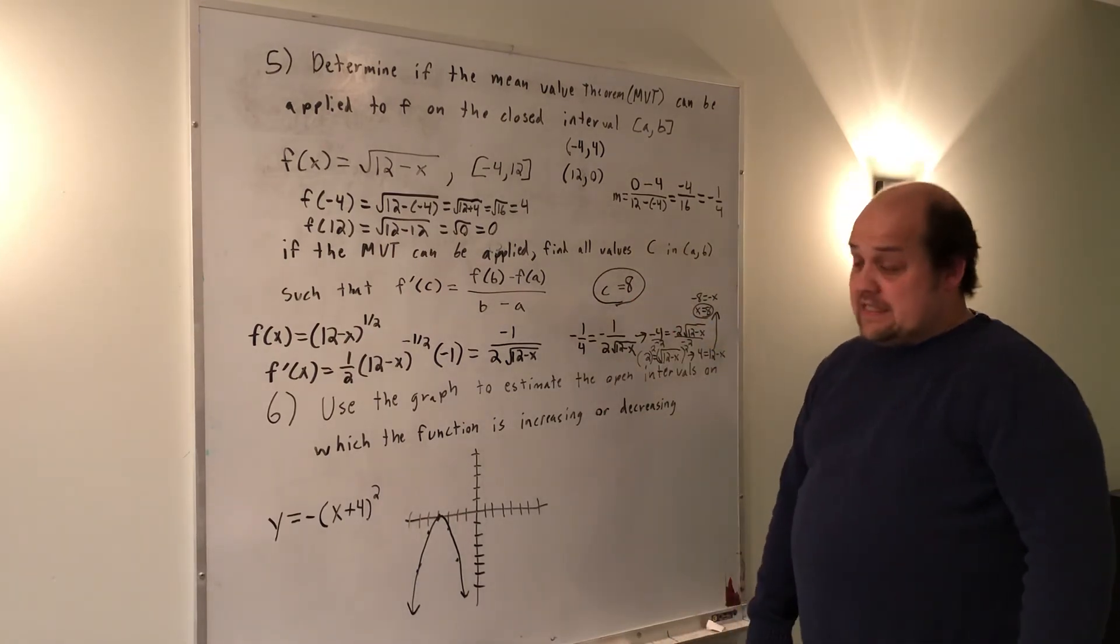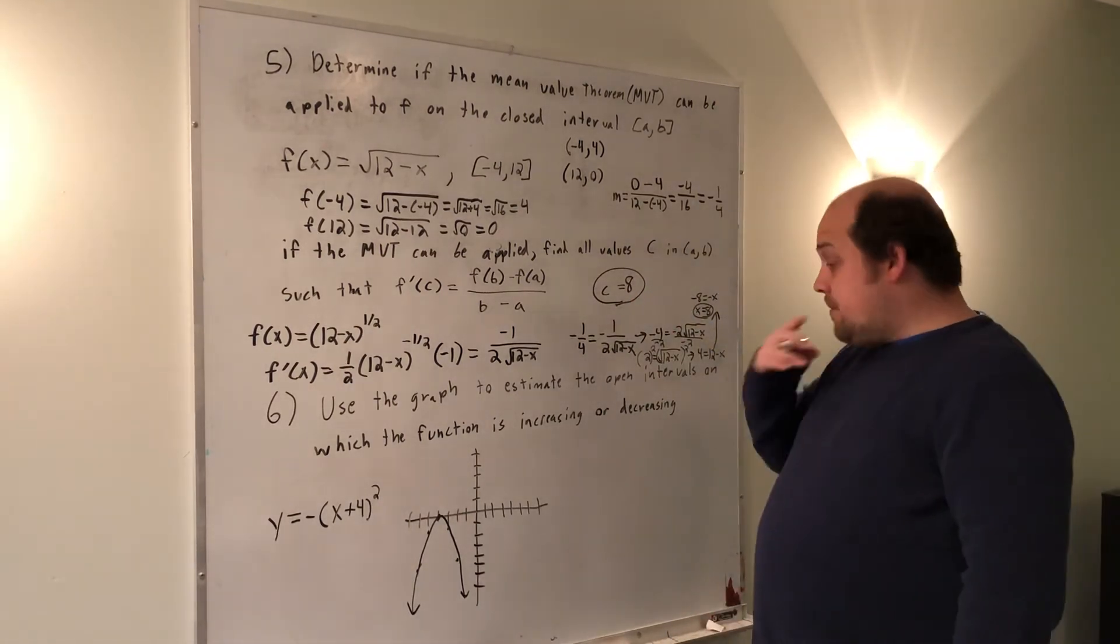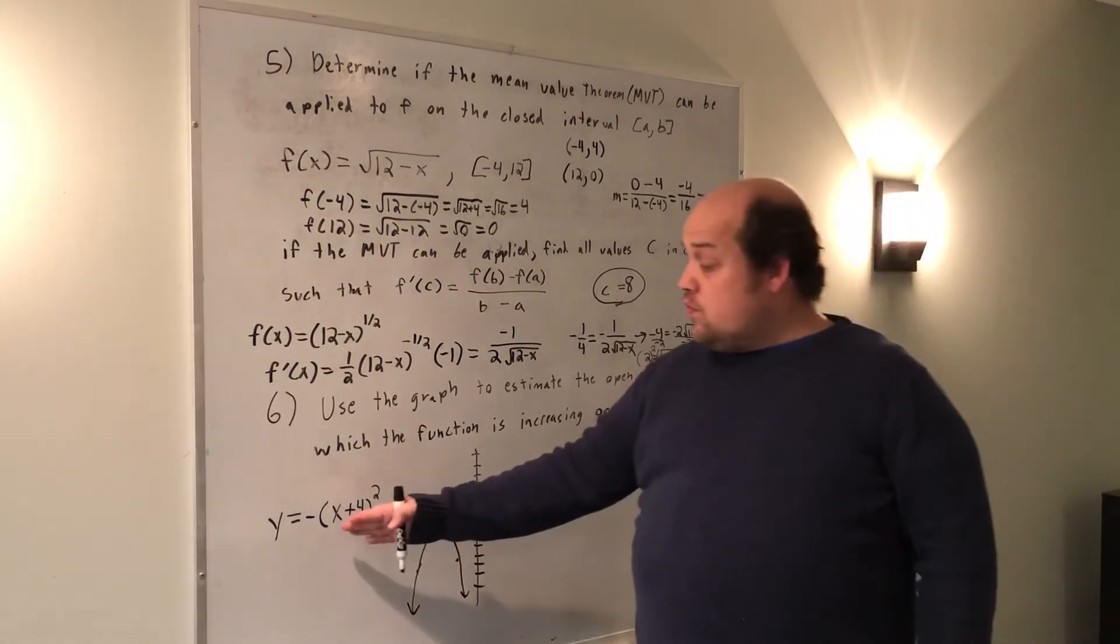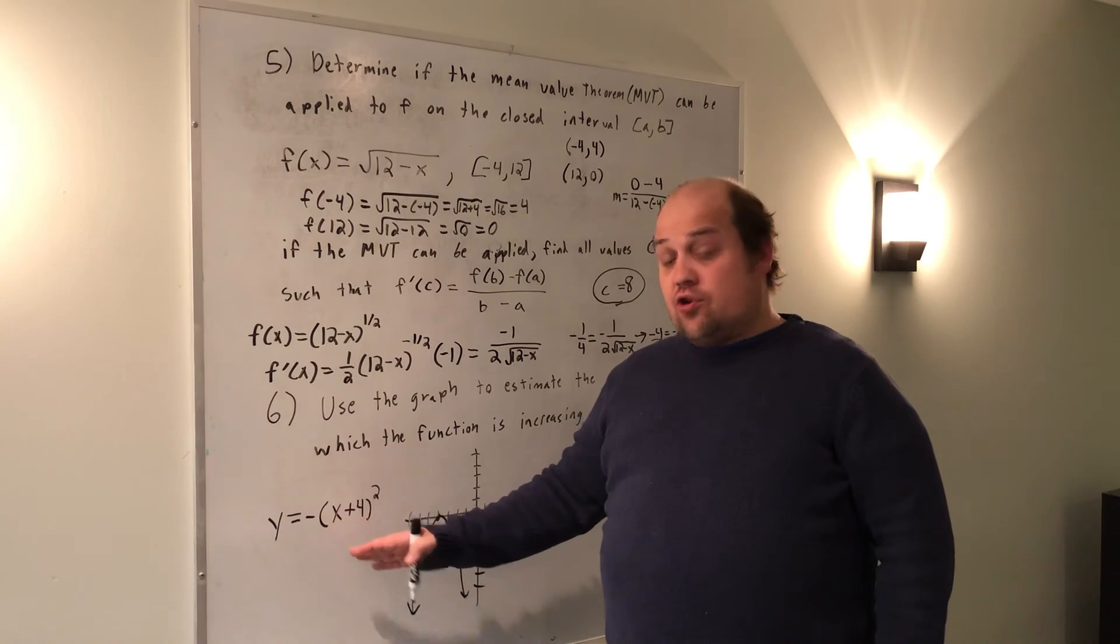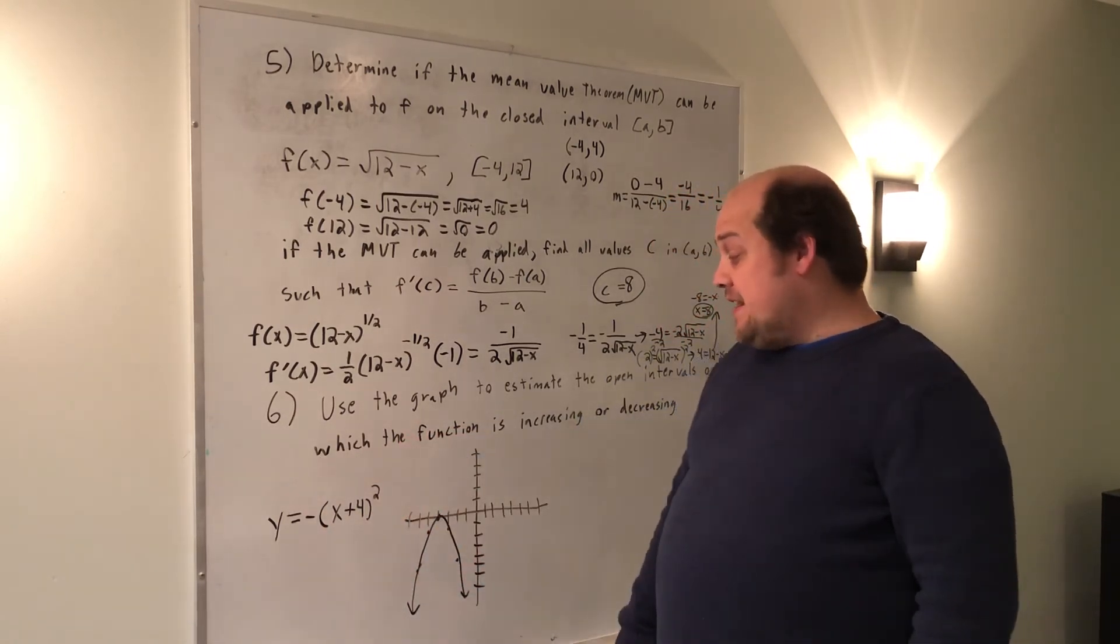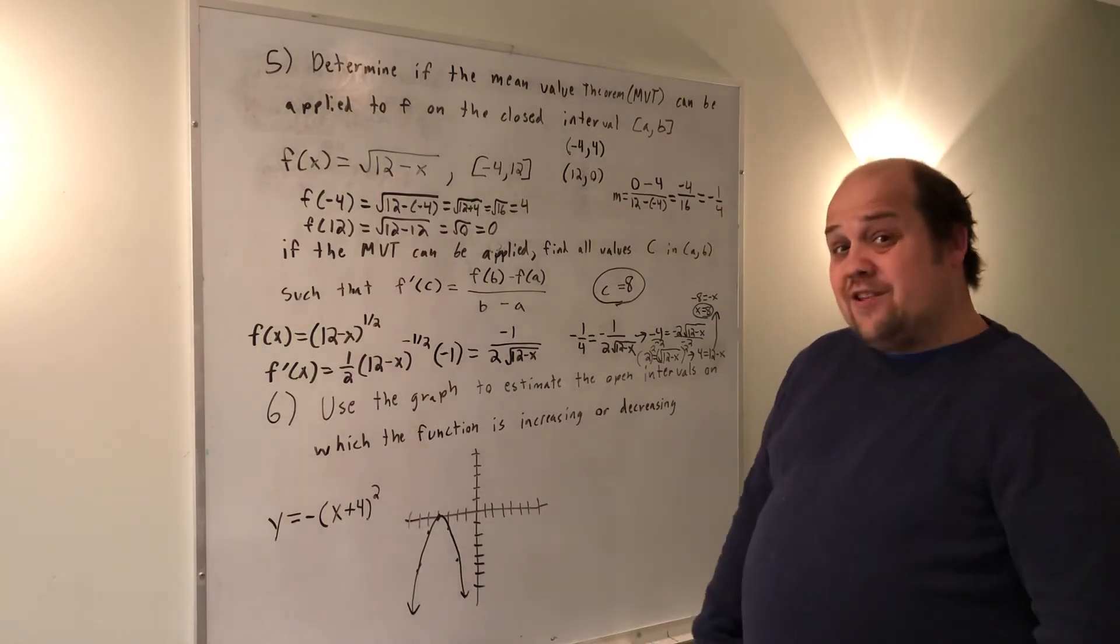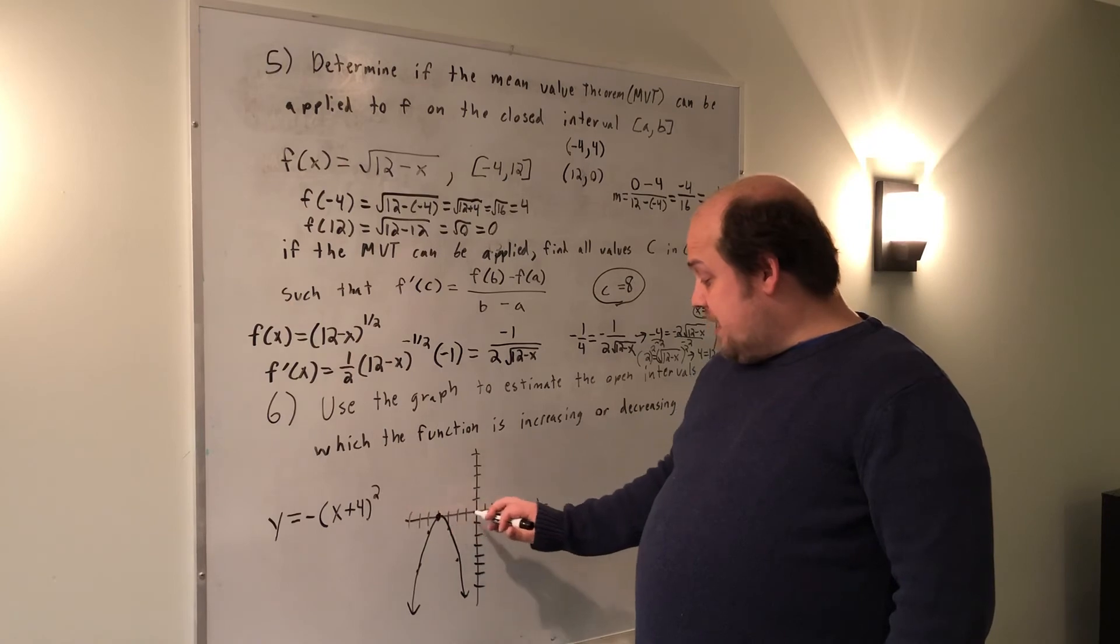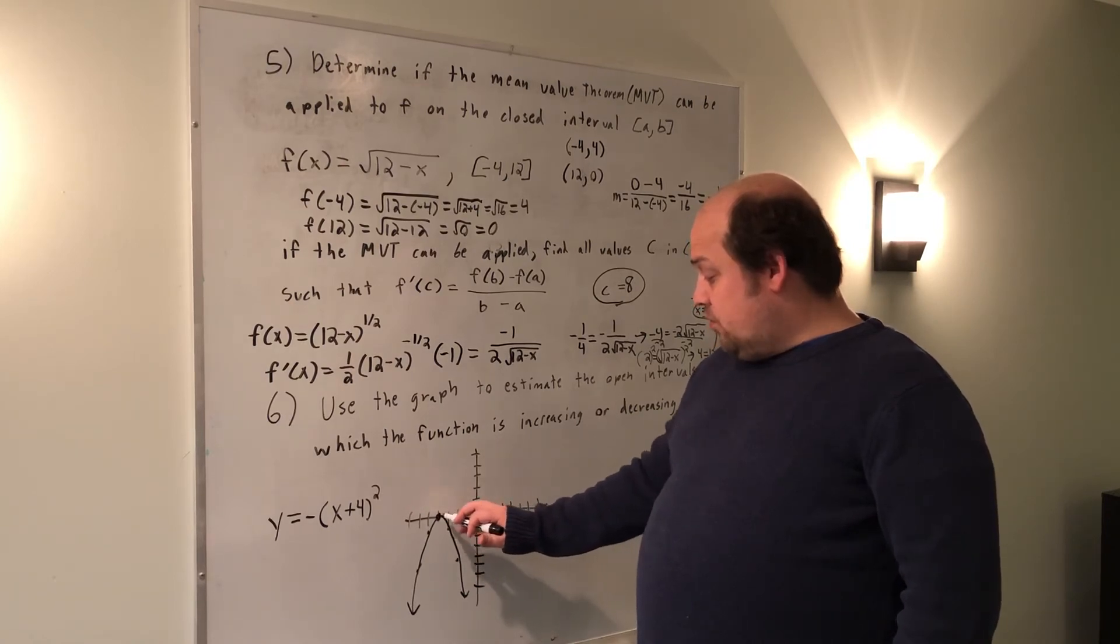Problem number 6 asks me to use the graph to estimate the open interval in which the function is increasing or decreasing. They do give me the function, so if I wasn't sure where it lines up on the graph, I could easily take the derivative and find it that way. But hopefully it's fairly straightforward on the graph. Here on the graph, we have a maximum point at x equals negative 4.